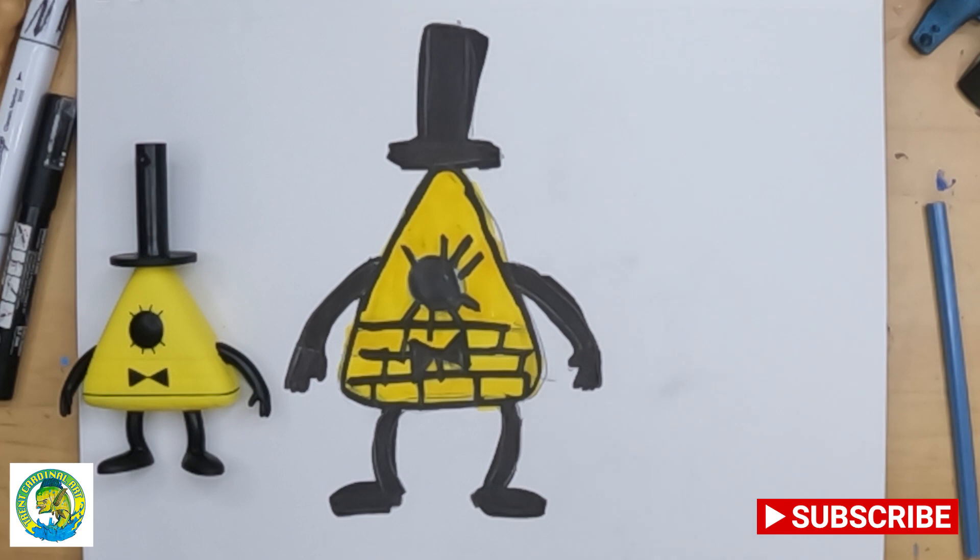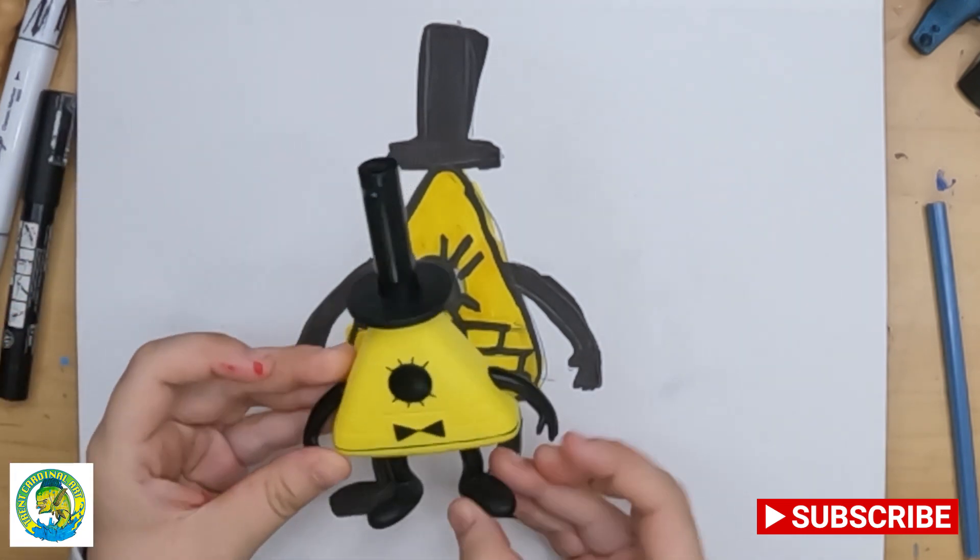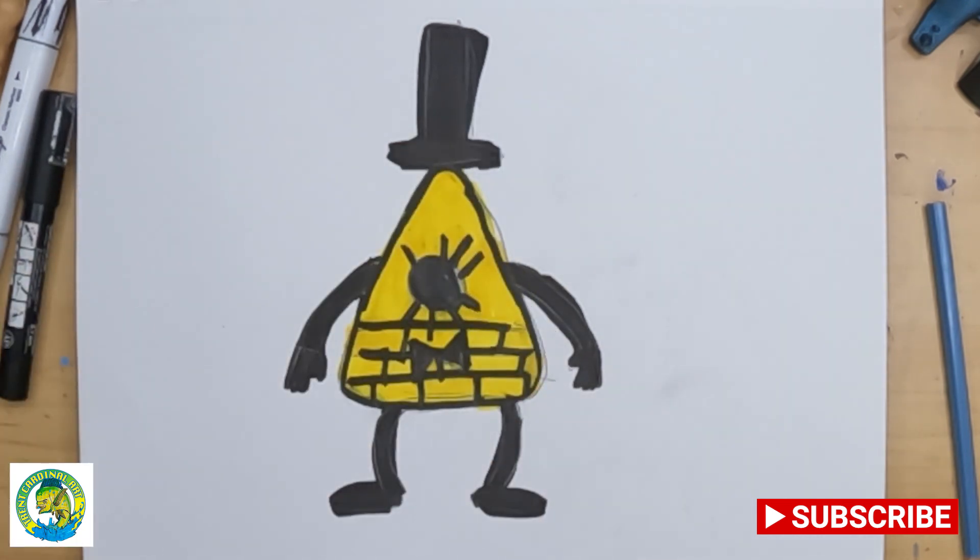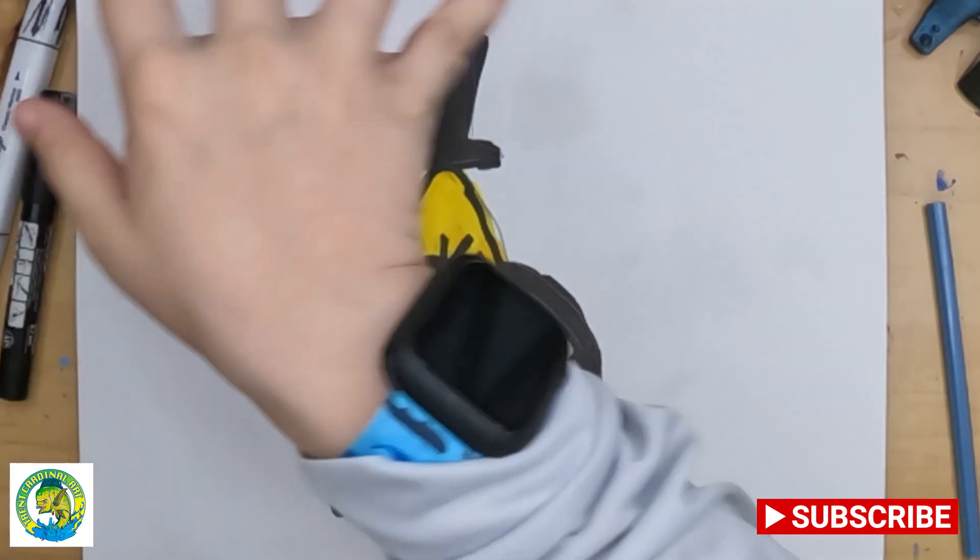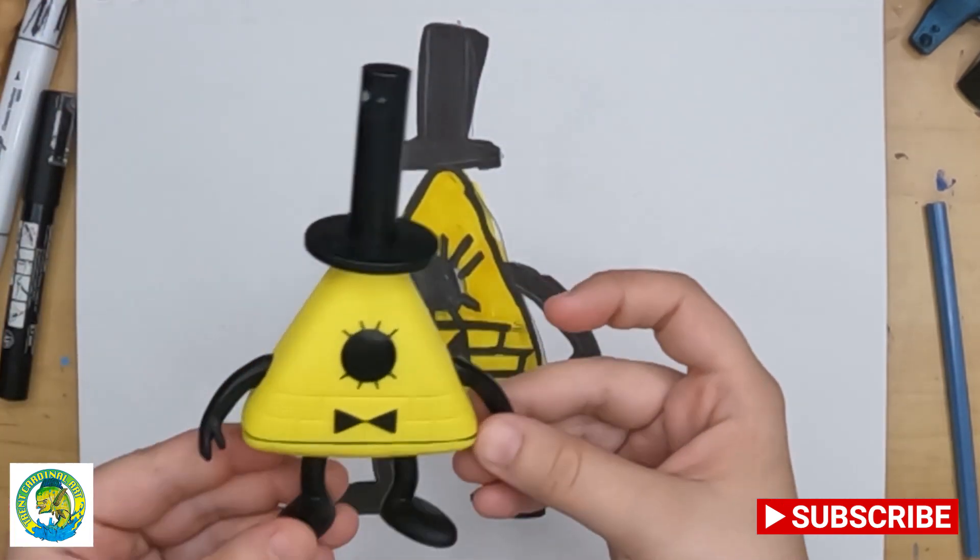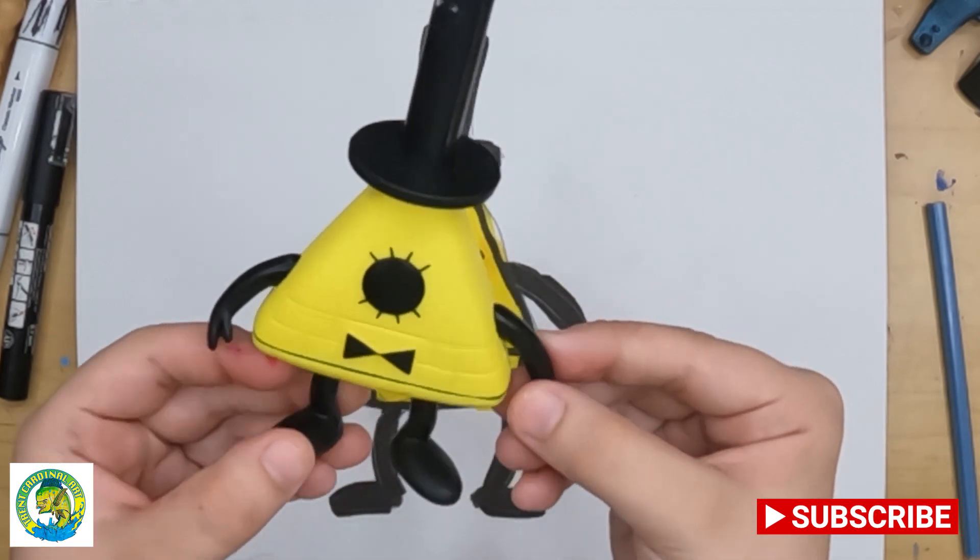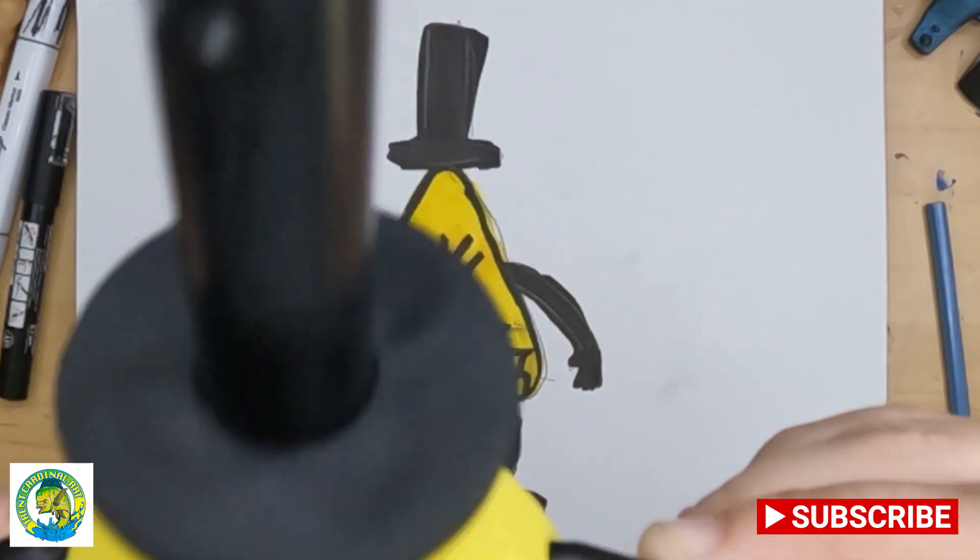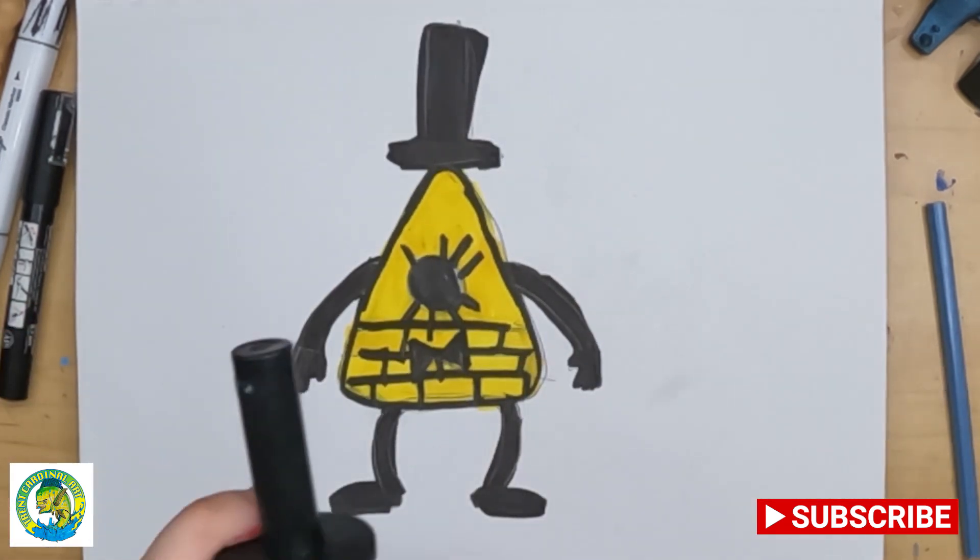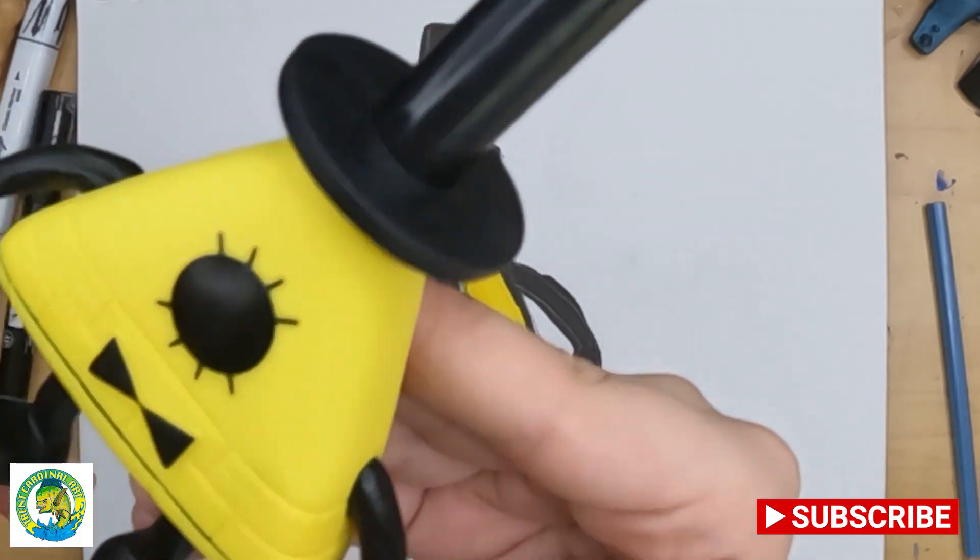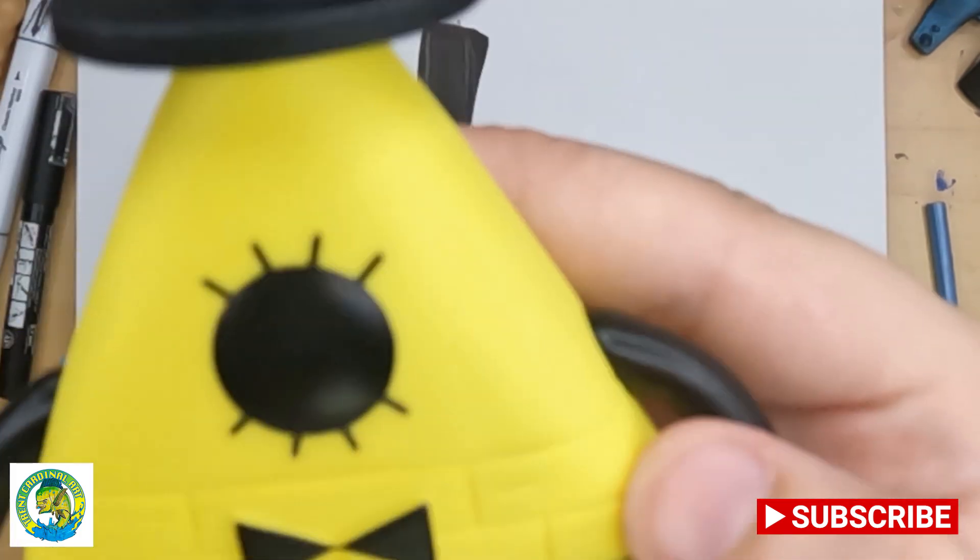So don't forget to like and subscribe to the video. This is what your Bill Cipher should look like. And pause the video anytime when you want. So yeah. Bill Cipher will say, I always come back. Oh no. That's William Afton's line. All right. I'll see you guys in the next one. Bye.